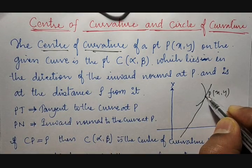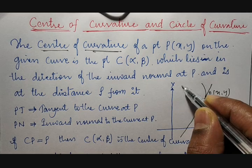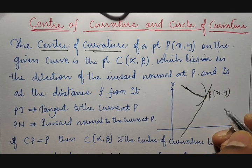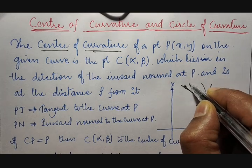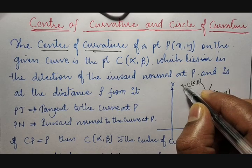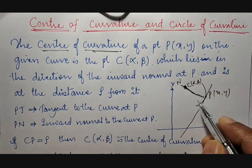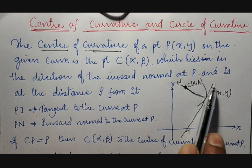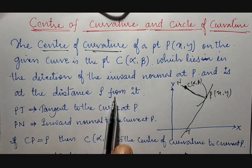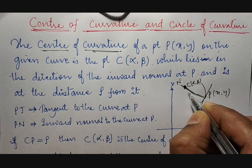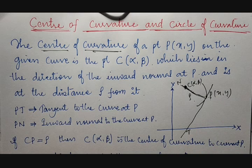If this is the tangent drawn, then the normal will be drawn to the tangent at a 90 degree angle. So there will be one point known as C(α, β). This is called the center of curvature. At the distance ρ from it — the distance from C to P — this distance will be taken as ρ. ρ is nothing but the radius of curvature.